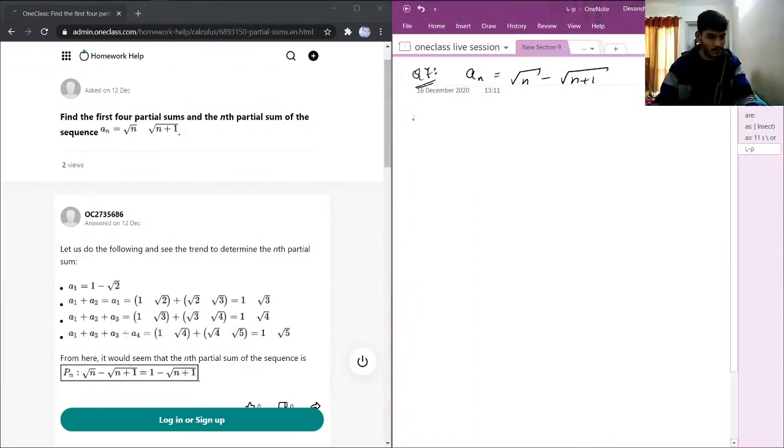We need to find the first four partial sums and the nth partial sum of the sequence. First, a1 will be square root of 1 minus square root of 1 plus 1, which is 1 minus square root of 2. So this is a1.